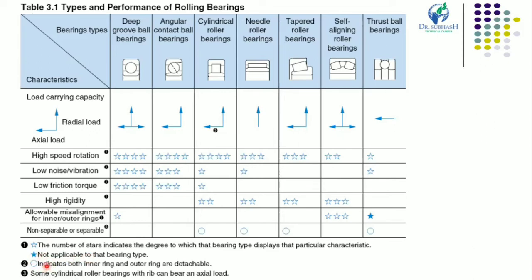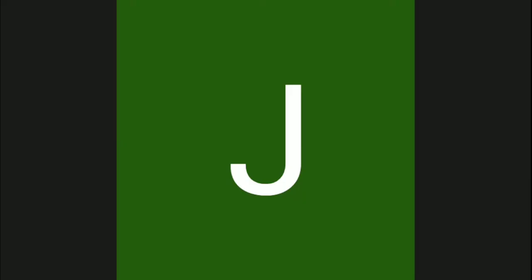A circle indicates that both inner ring and outer ring are detachable. For deep groove ball bearing: it can take radial load as well as axial load on both sides. It has four stars for high speed rotation, is good in low friction torque, has poor rigidity performance, and only one star for allowable misalignment. For angular contact ball bearing: it gives good performance at high speed rotation, three stars for low noise and vibration, and three stars for low friction torque.